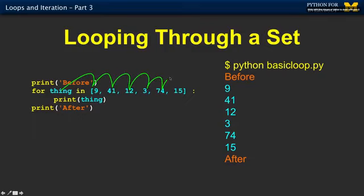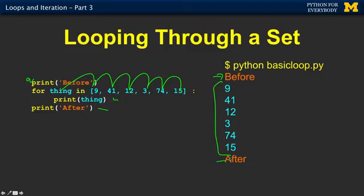Here's the little loop that we're going to do, and I'm going to do this over and over again — you're going to get tired of these numbers. For some iteration variable in 9, 41, 12, 3, 74, 15 — we print out before the loop, we do something during the loop, and after the loop. Right now I'm just printing everything out so you can see how the loop kind of works.